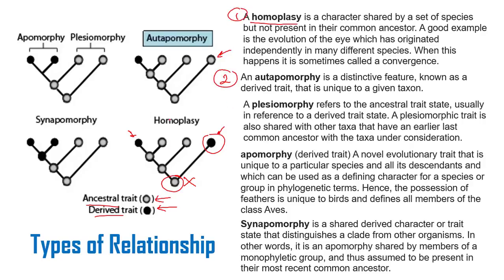Autoapomorphy is a distinct feature known as a derived trait unique to a given taxon. So autoapomorphy is a distinct derived feature. In the example, all individuals share the characteristic of their ancestor, but one species — let's say species X — has a derived character that no other individual has. That is autoapomorphy.